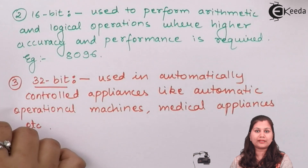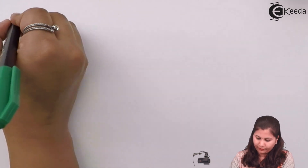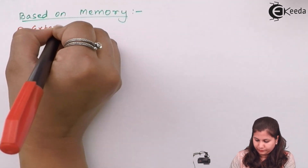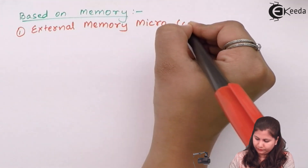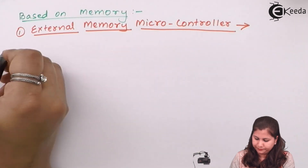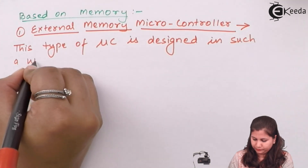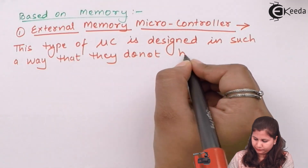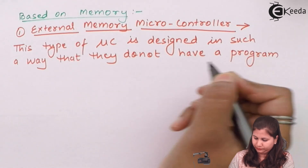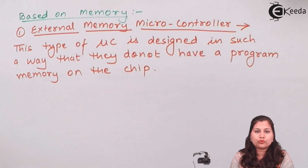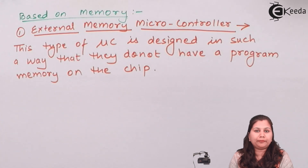The next classification is based on memory — two categories: external memory and embedded memory. In microcontrollers, there are two memories: program memory, where all programs are stored, and data memory, where all data is stored.